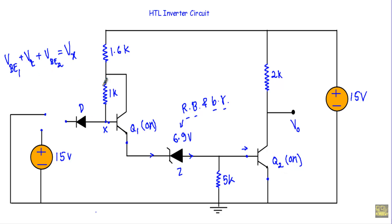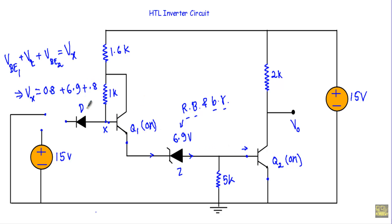Let me calculate the numerical value of Vx. To turn on transistor Q1, I apply a voltage of 0.8 volt at its base-to-emitter terminal. The Zener diode has a breakdown voltage of 6.9 volt. To turn on transistor Q2, I apply 0.8 volt at its base-to-emitter terminal. Therefore, to turn on transistor Q2, I need a voltage equal to 8.5 volt between this terminal and the ground terminal.